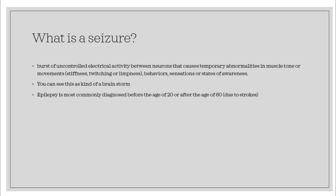A seizure is basically a burst of uncontrolled electrical activity between your neurons that temporarily causes abnormalities in your muscle tone — so you're shaking, twitching, stiffness, limpness, all that kind of stuff — your behavioral differences and sensations and states of awareness. You can kind of see this as like a brainstorm; your electrical activity is going crazy in your brain and that causes you to have a seizure.